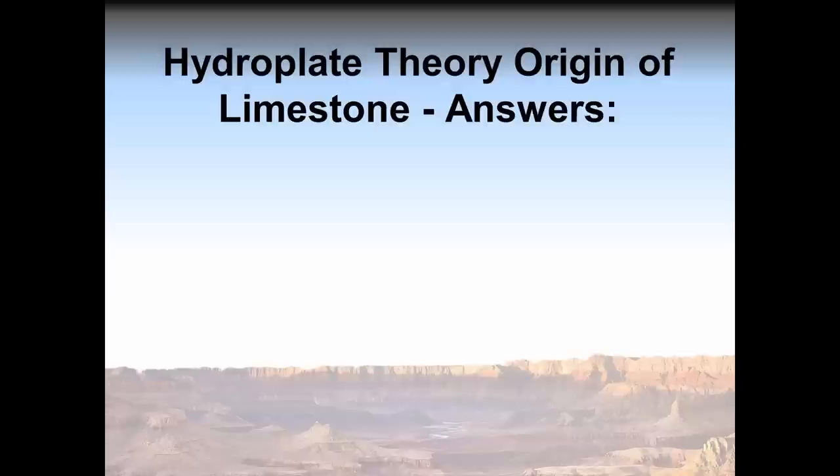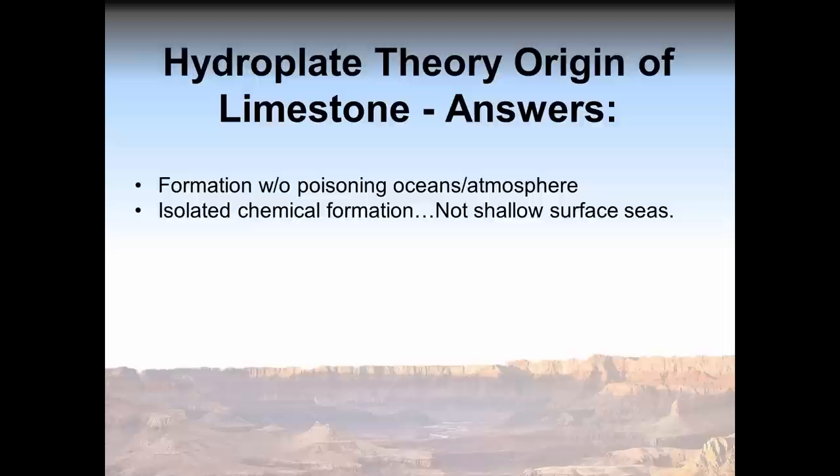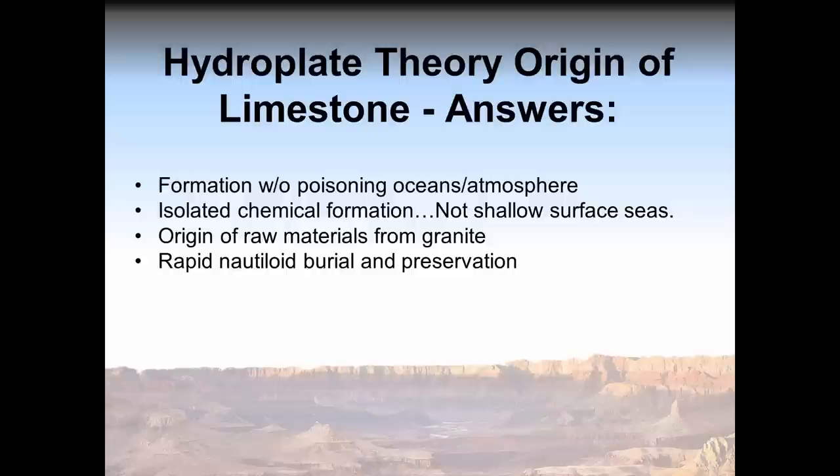As we've just seen with limestone, the hydroplate theory readily explains how so much limestone formed without poisoning the oceans and atmosphere in CO2, how limestone formed chemically while isolated from Earth's surface, eliminating the standard theory's requirements for perfectly timed sinking of hundreds of shallow seabeds on Earth's surface, how the raw materials to make so much limestone came from granite, and how millions of well-preserved fossils like nautiloids were caught and rapidly encased in limestone. And finally it explains how limestone ended up on comets and asteroids.